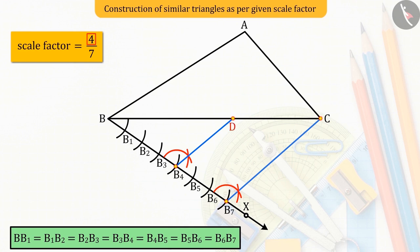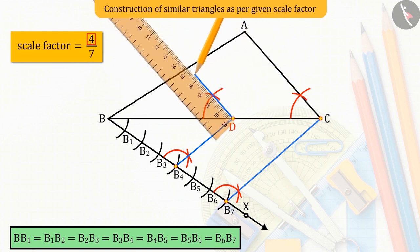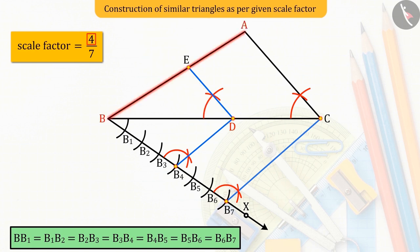Again, from the point D, we draw a line parallel to side AC, such that it intersects the side AB at point E.